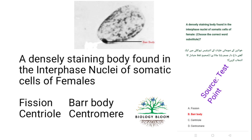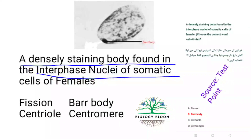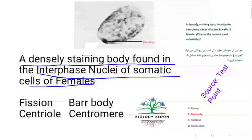The first question is: a densely staining body found in interphase nuclei of somatic cells of females. Which densely staining body is found in somatic cells of females in interphase?